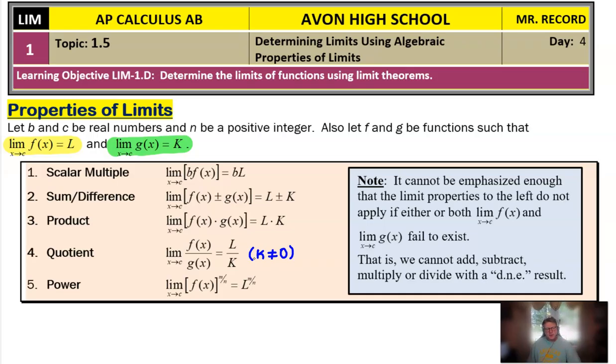Now on the surface those three rules don't seem very tricky but if you read the note over there in blue it cannot be emphasized enough that those limit properties that you see to the left will not apply if either or both the limit of f of x and the limit of g of x fail to exist. Think about it we're going to have a really difficult time adding or subtracting or multiplying or dividing does not exist right we don't know what does not exist plus two is we don't know what does not exist times four is and so that doesn't mean that the limit's going to fail to exist necessarily it just means that we're going to have to work a little bit harder and that's when the idea of these limits using these algebraic properties can become just a little bit more difficult.